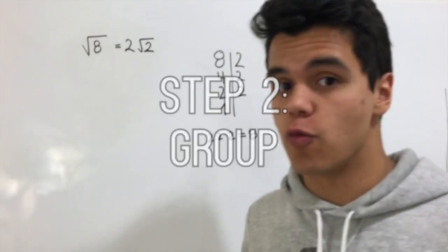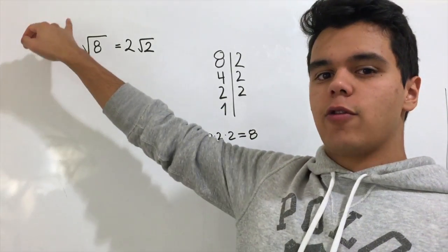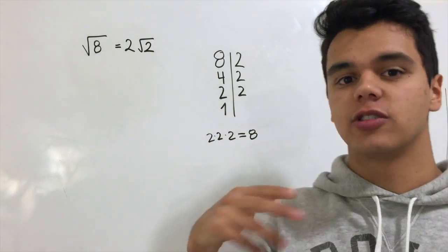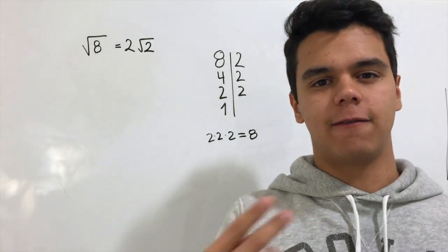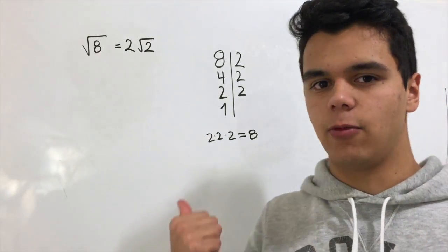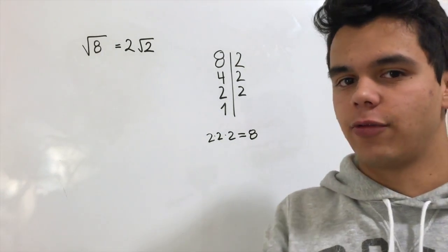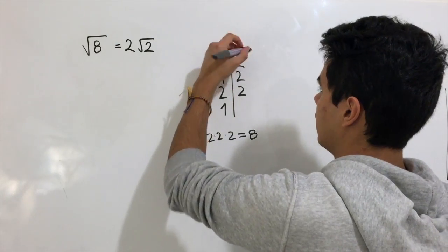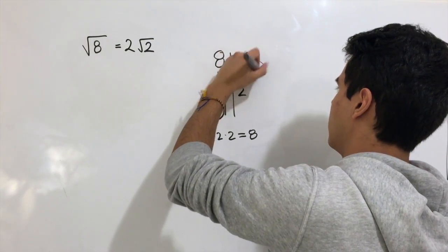Second step: group. Since this is a square root, we need to have factors that are squared. When we have factors that are the same, that go by couples, we can take them out of the radical. I like to cross them out.